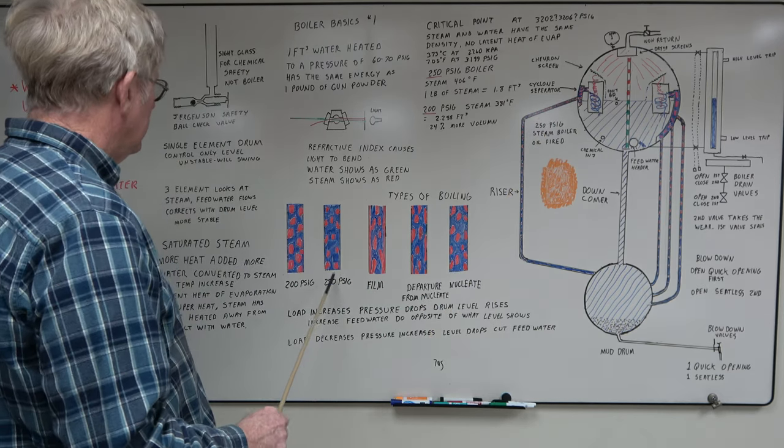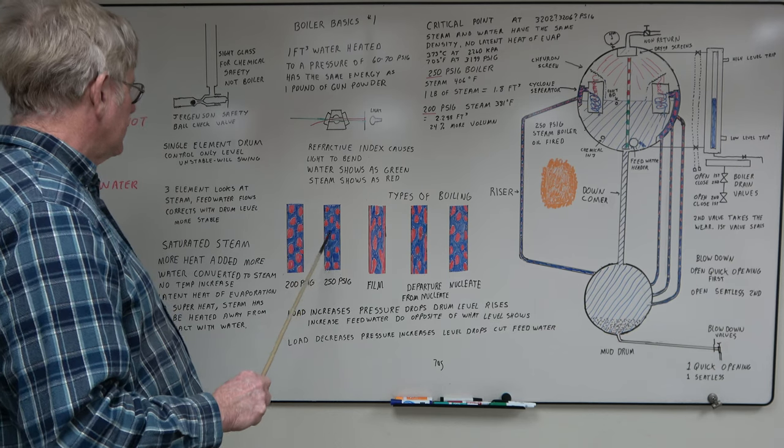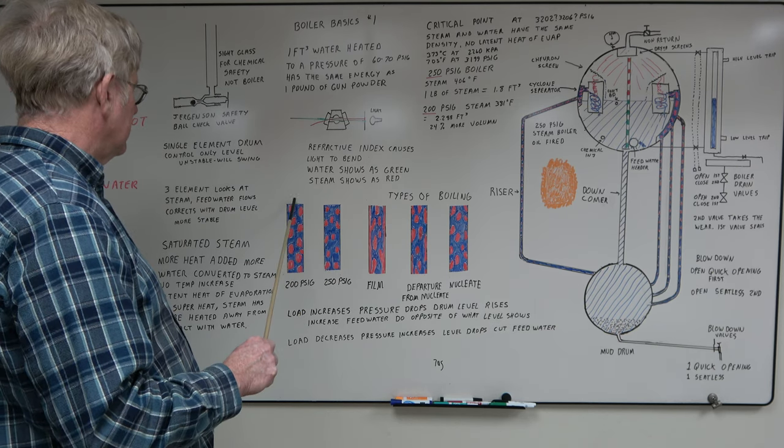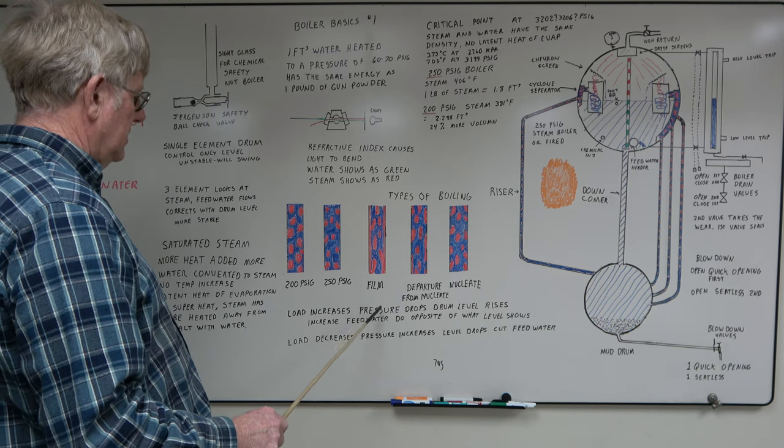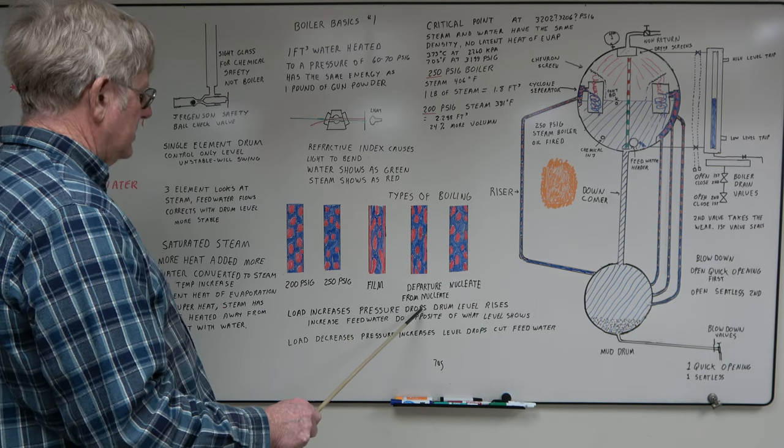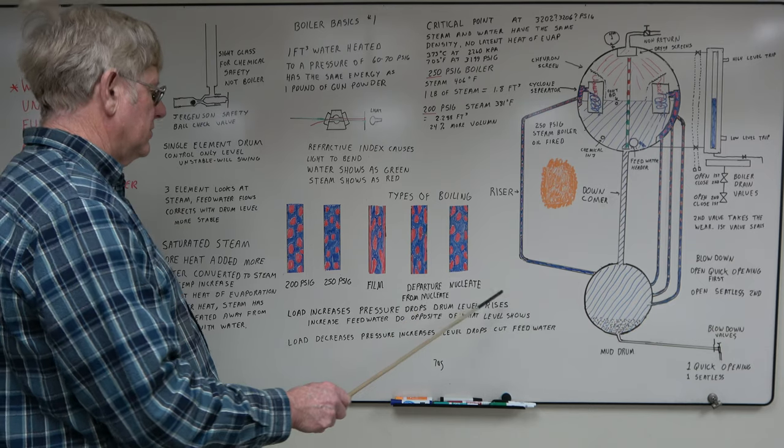It shows the 250 PSI smaller steam bubbles. If you drop this to 200, steam bubbles become a lot larger. You have a lot more volume. So as your load increases, the pressure drops, the drum level will rise.